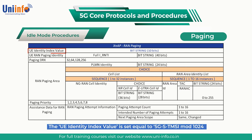The UE identity index value is set equal to 5G-S-TMSI mod 1024, i.e. a value from 0 to 1023 which occupies 10 bits. This value allows the target base station to determine the paging frames and paging occasions without having to transfer the full 5G-S-TMSI across the XN interface. The UE RAN paging identity is the full I-RNTI which was allocated to the UE within the RRC release message when moving the UE to RRC inactive. This identity is used to address the UE within the RRC paging message.